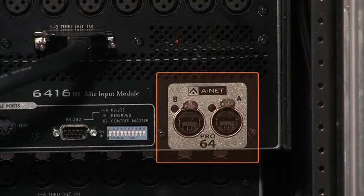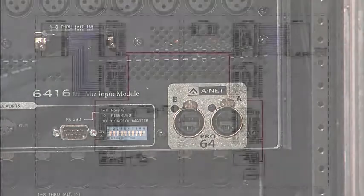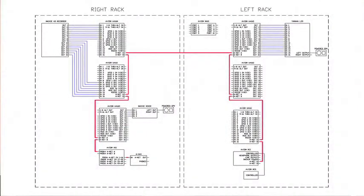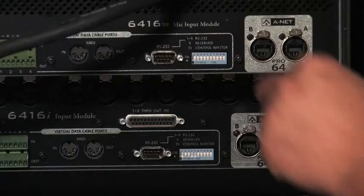We're going to spin the racks around and give you a view of the back panel of the equipment. Each Pro 64 device has two ANET ports, one labeled A, one labeled B, but in auto mode they're interchangeable. Our first example is going to be a daisy chain topology, as shown in this drawing.